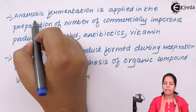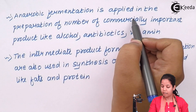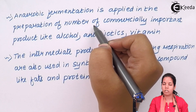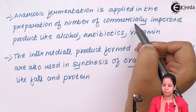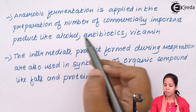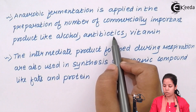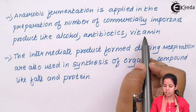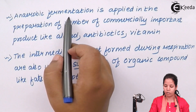When we talk about anaerobic fermentation, a number of products formed during fermentation in the absence of oxygen can be used as commercially important products. One of them is ethyl alcohol. Antibiotics like streptomycin and erythromycin can also be produced, as well as vitamins like B12, colbermine, vitamin C, and vitamin A, which are synthesized chemically by anaerobic fermentation and are of great importance.